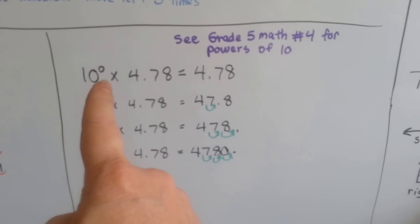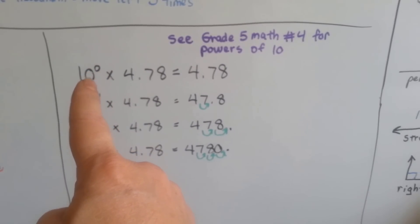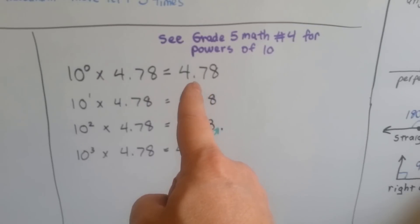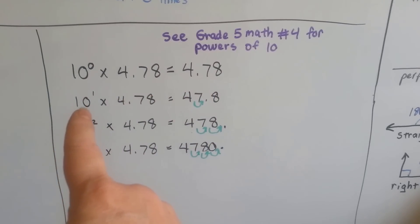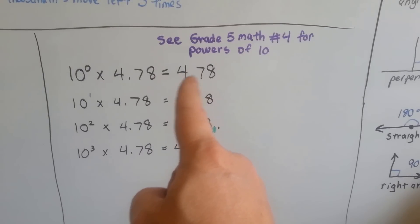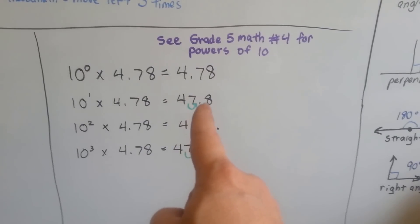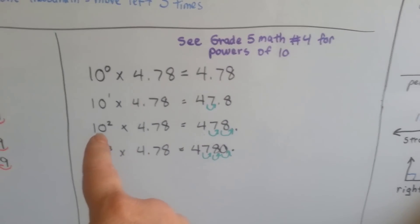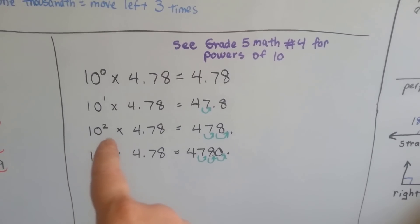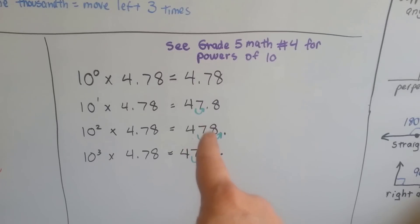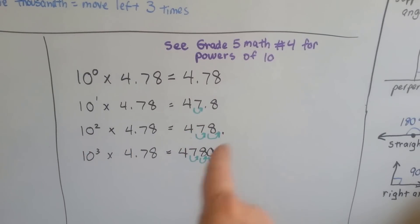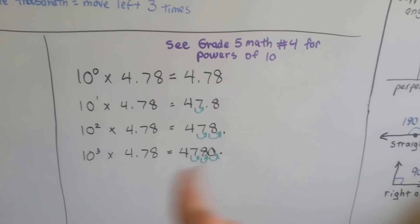We have ten to the zero power. Any number with a zero power is equal to one, so it's like saying one times four and seventy-eight hundredths — it stays four and seventy-eight hundredths. Ten to the first power is equal to ten, so the decimal point moves one time, from between the four and seven to between the seven and eight. Ten to the second power is one hundred — two zeros — so the decimal moves over two times. Third power means move over three times. Do you see the pattern?